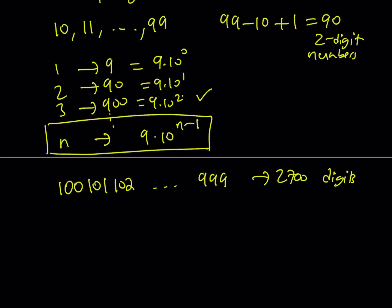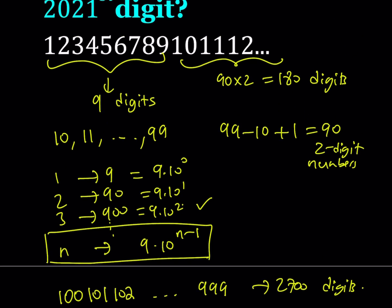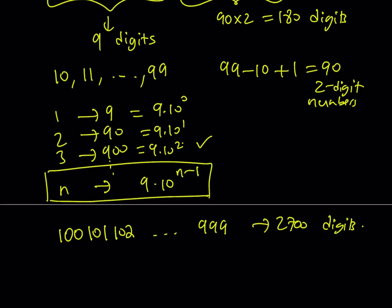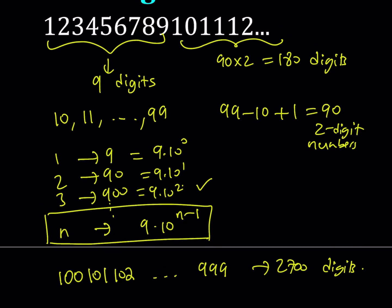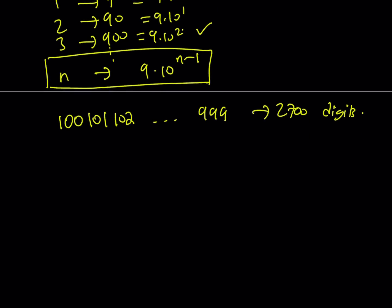But remember, we only need to get to 2021st. So we don't need to use all the three-digit numbers to get to 2021st. But we definitely need to use the single-digit numbers and the two-digit numbers. Great. So let's go ahead and add up 9 plus 180. So we're going to have 189 digits when we write all the single digits and the two-digit numbers. So now we're at the end of 99. So the next number that's coming up is going to be 100. So here we have 189 digits.